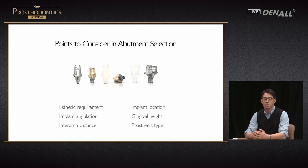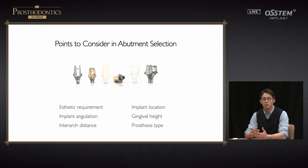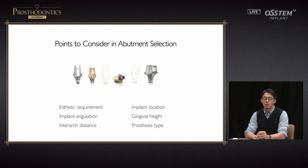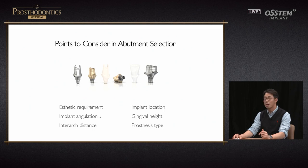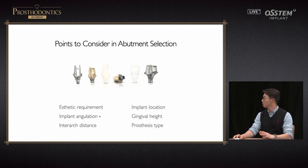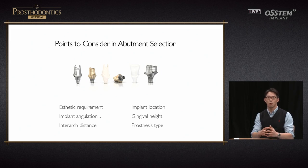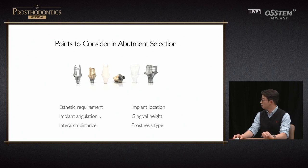When clinicians do implant prosthodontic treatment, it is very important to choose the appropriate abutment. I choose different abutments depending on different situations — at times a stock abutment, other times a titanium custom abutment, or zirconia/ceramic abutment. Factors to consider include the inclination of the implant placed, whether it is angled or straight, the placement position, and whether it is accurately centered on the occlusal surface.